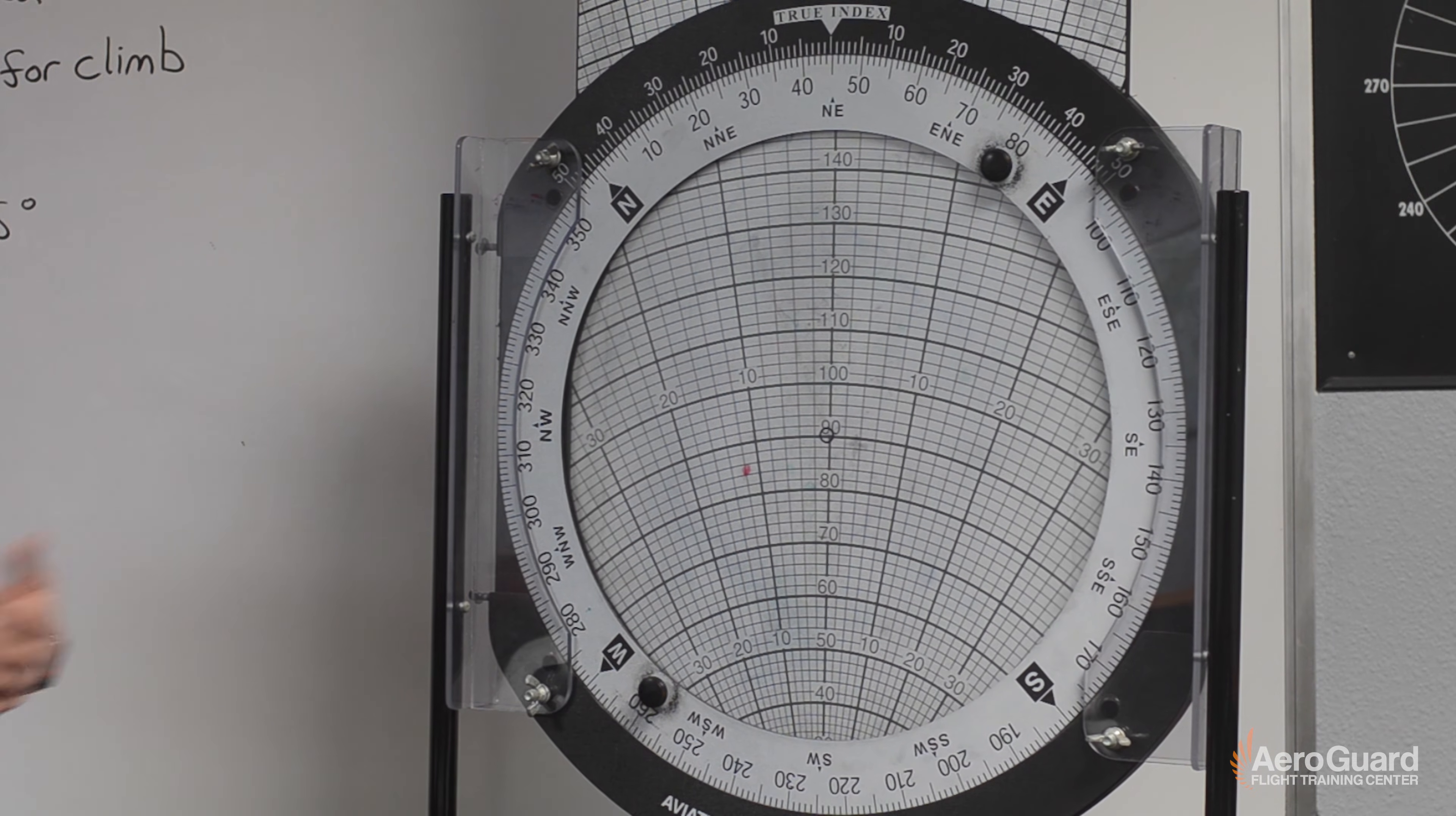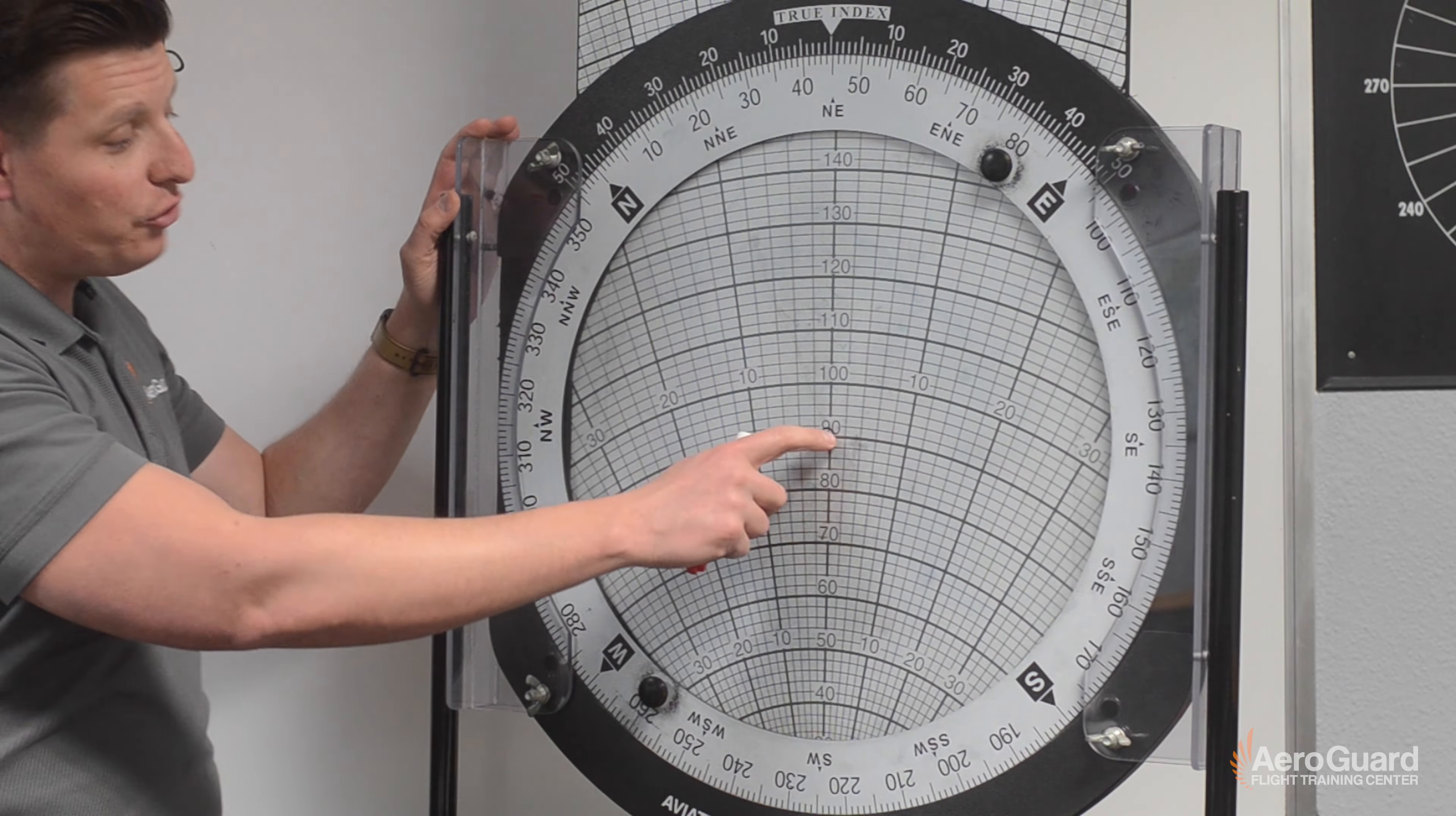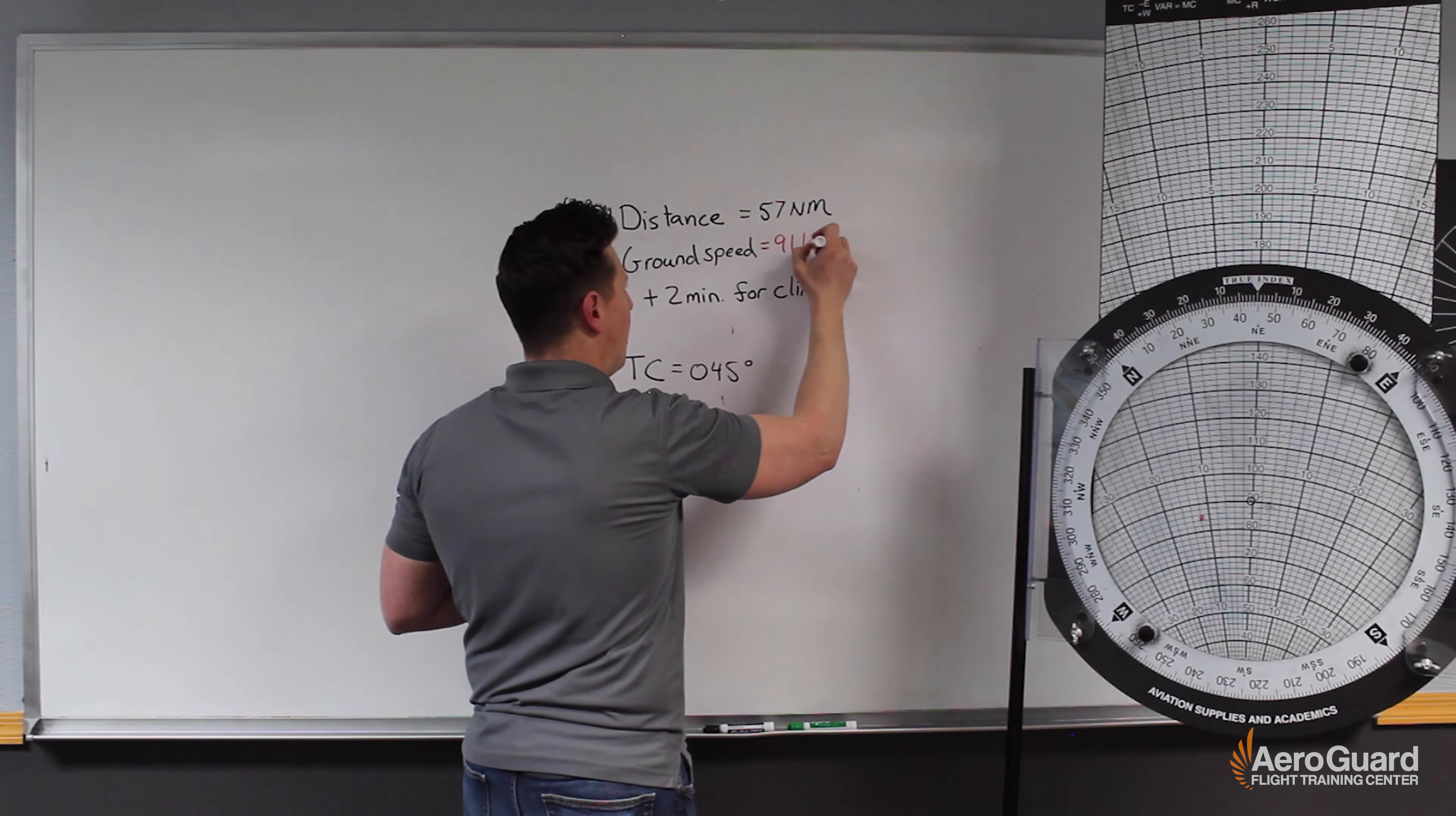Now we can read our answers. The first thing we can read is a wind correction angle. In this case that's not really that relevant to answering the question so I'm not going to worry too much about it. The next part is we can read our ground speed under the center dot. So our ground speed is approximately 91 knots.